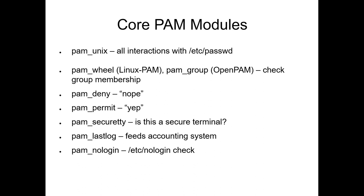pam_unix handles /etc/passwd. Linux PAM has pam_wheel; pam_group is what we use in OpenPAM to check group membership. Linux PAM also has a pam_group module with a completely different function than the OpenPAM pam_group — because programmers hate us. pam_deny, pam_permit. pam_securetty checks to see if this is a secure terminal like the console. lastlog feeds the accounting system and nologin does the /etc/nologin check.